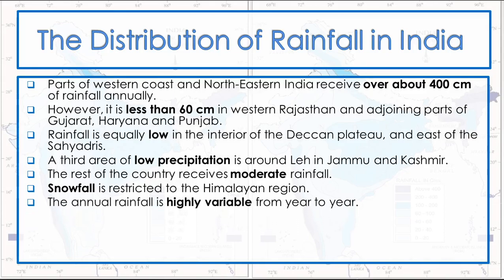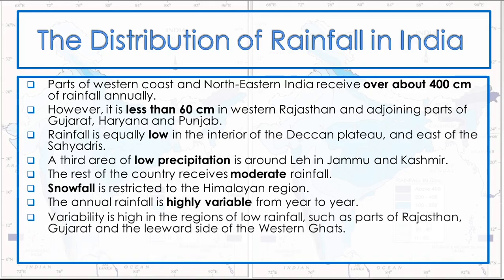The annual rainfall is highly variable from year to year. Variability is high in regions of low rainfall, such as parts of Rajasthan, Gujarat, and the leeward side of Western Ghats.